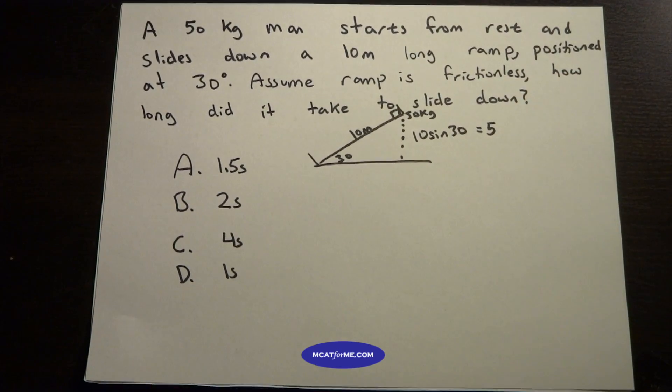We know that the height is 10 sin 30 degrees, and that's just basic trigonometry, so that would equal 5. So we know that the height starts at 5, and the one thing that we want to know is that anytime we're dealing with time, especially time and also a height of a ramp, we know that this has to be conservation of energy.